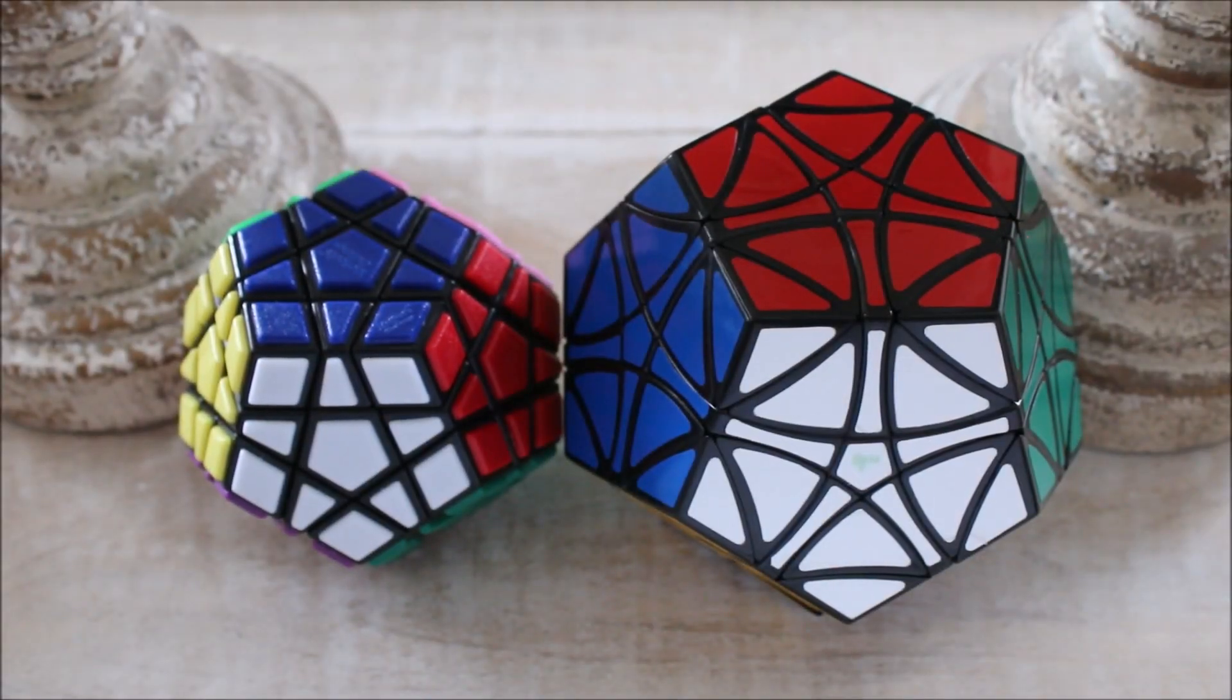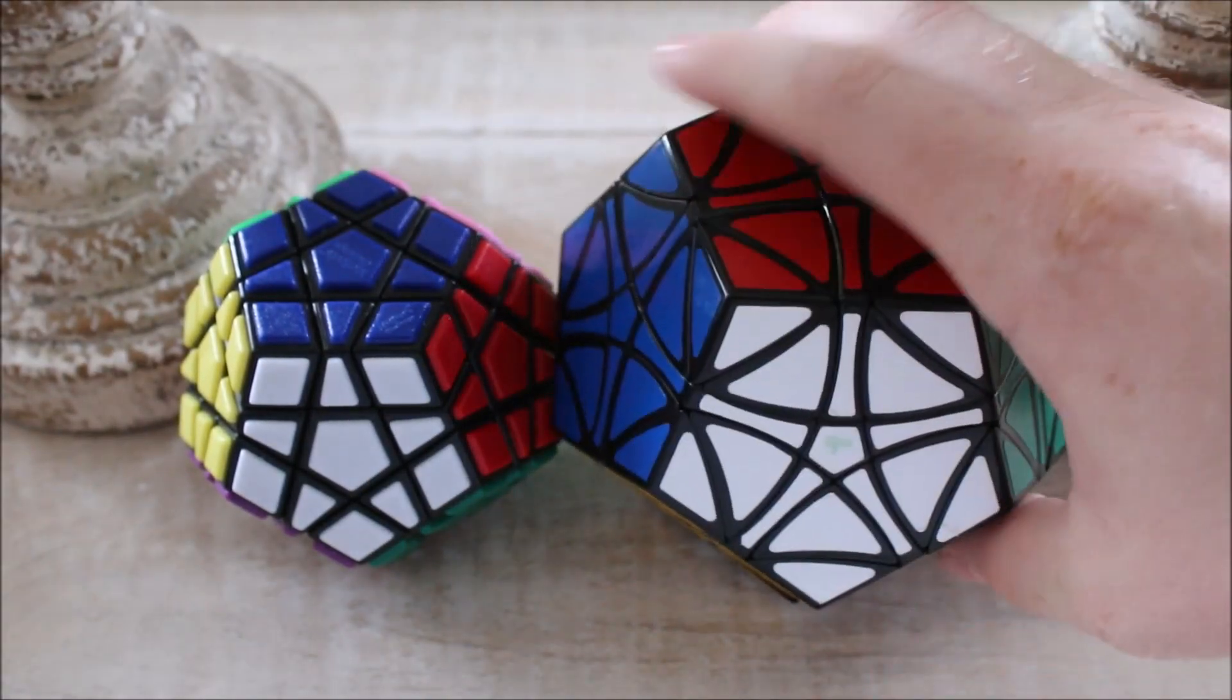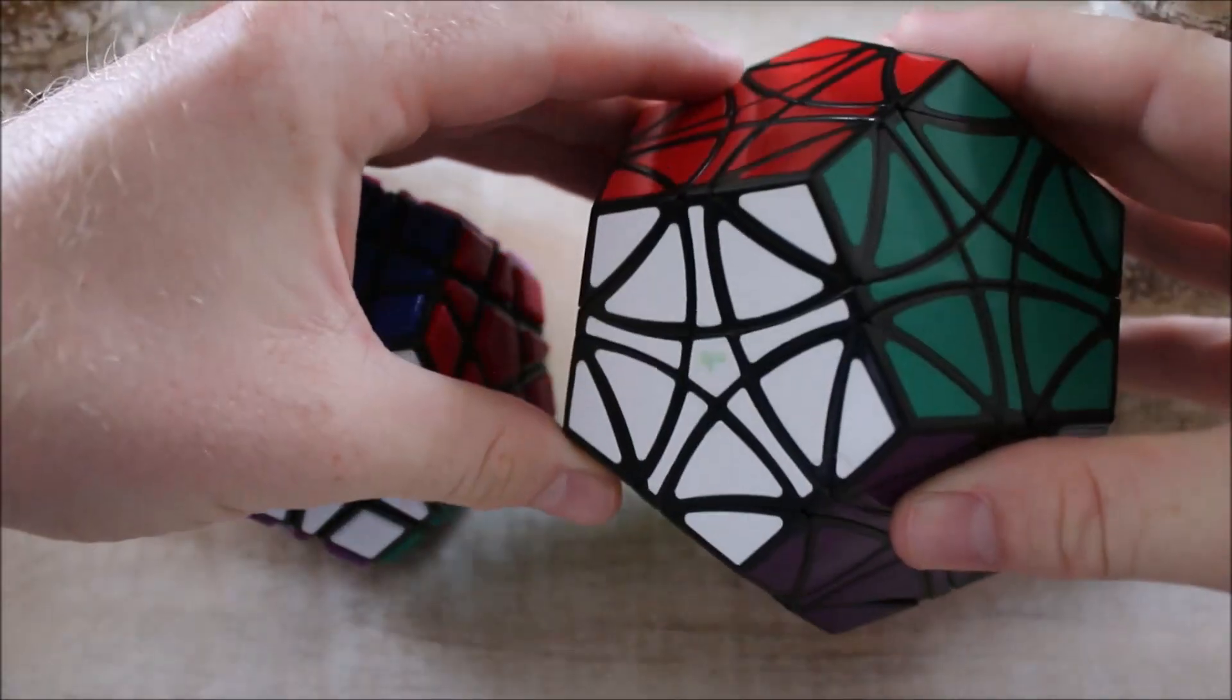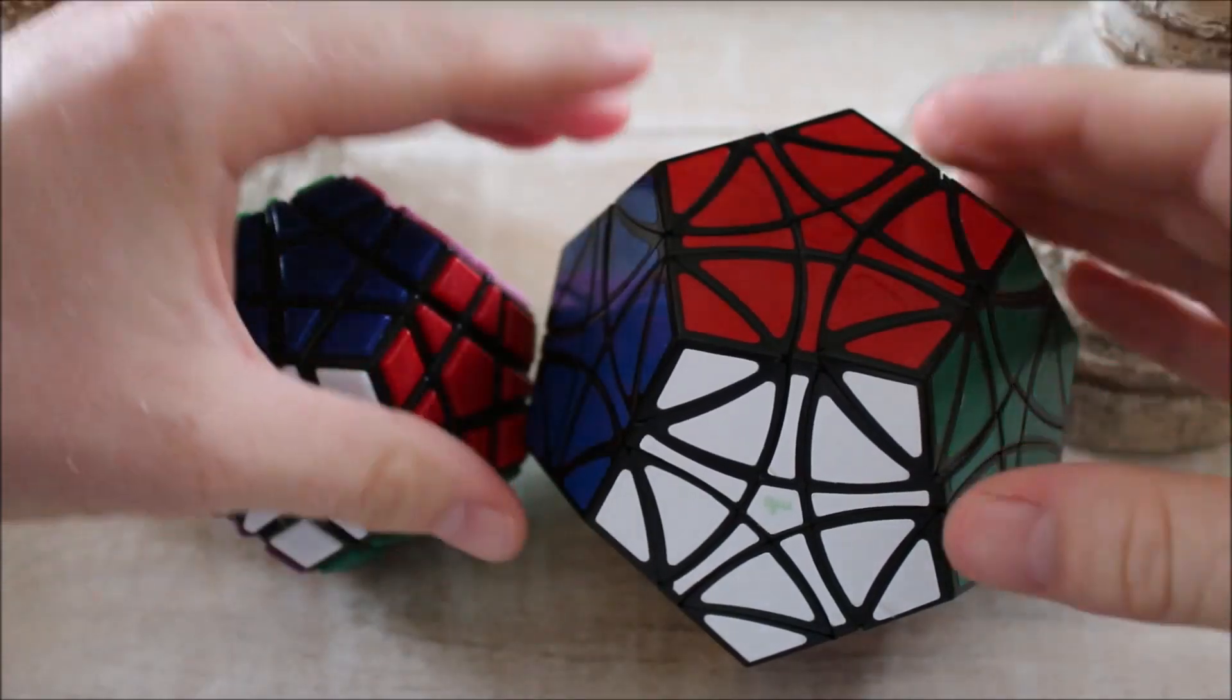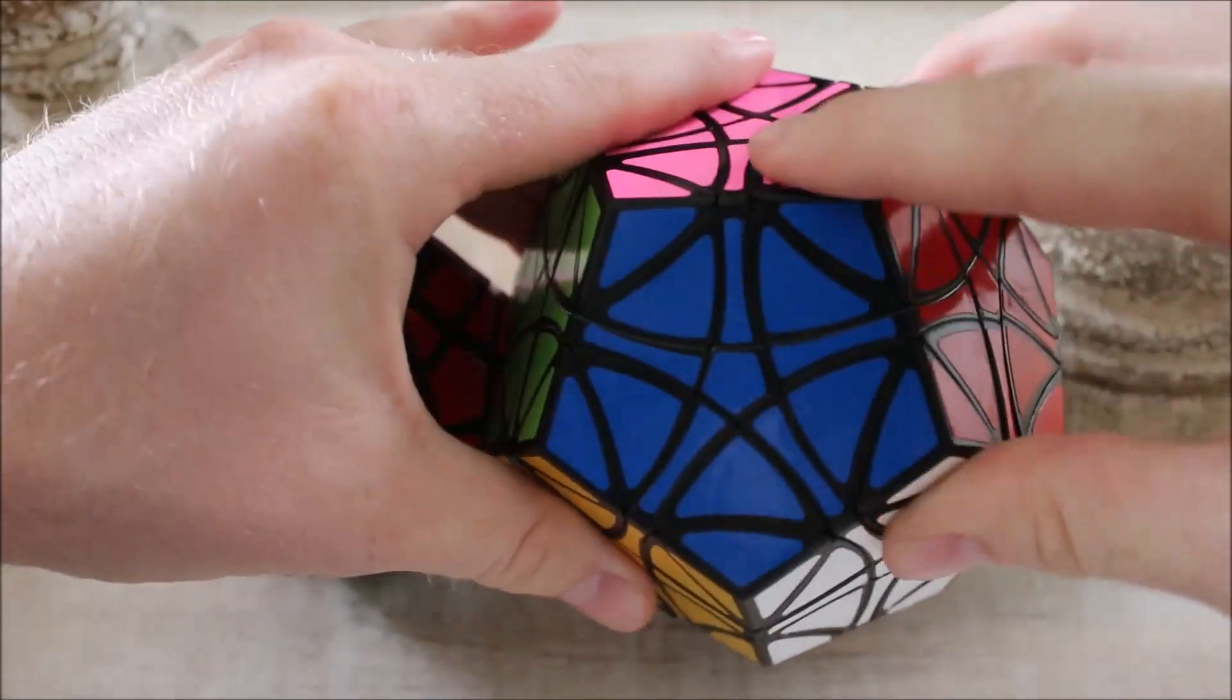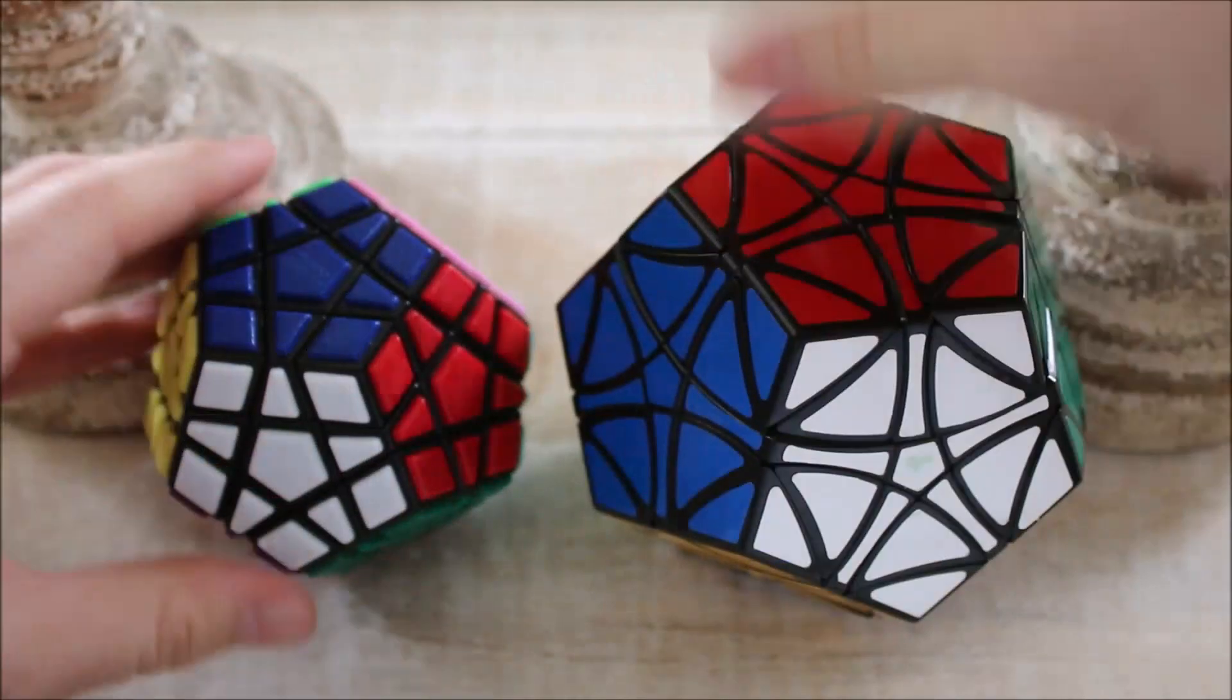To first give a little backstory to the Megacopter, ever since I first got the MF8 Helicopter Dodecahedron right here, which turns on these helicopter axes, I always thought to myself, shouldn't it also turn like a Megaminx right here? It looks like it should.